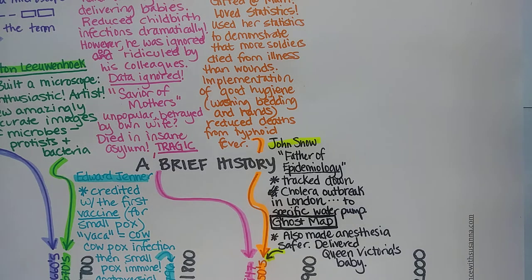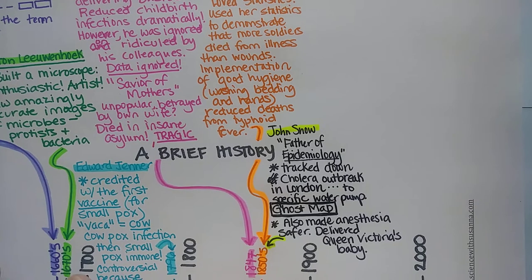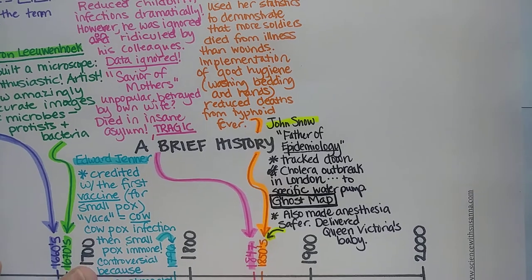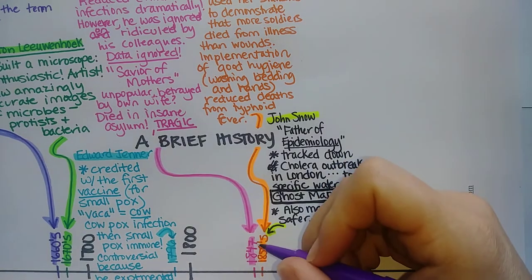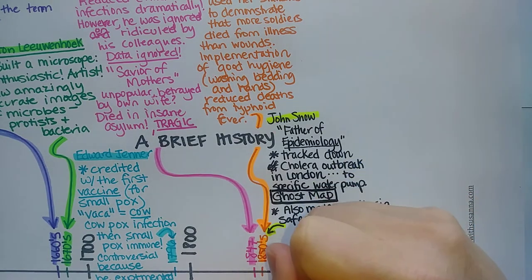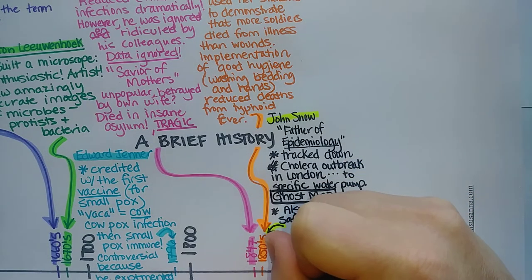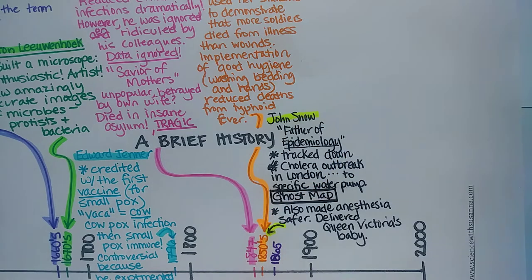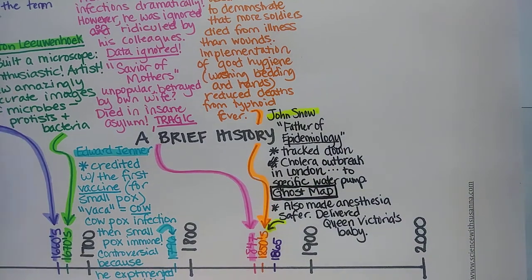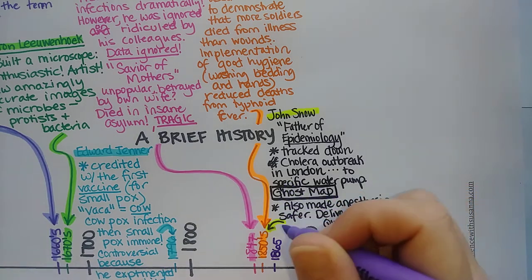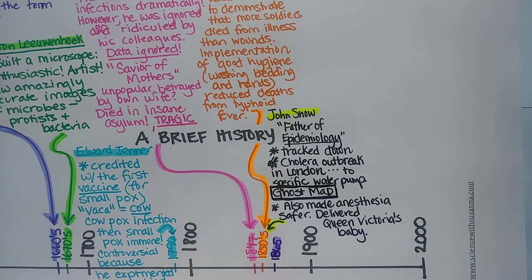Next up is Joseph Lister. The next date is 1865. For people from the U.S., they might remember this is also the year the Civil War ended.